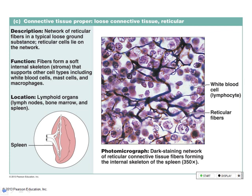Still in the loose connective tissue category, we have reticular connective tissue. What do we have a lot of in this? Lots of reticular fibers. In this particular specimen — the spleen — we have lots of white blood cells too, because white blood cells use the reticular fibers as a place to stick. The reticular fibers are the dark lines that come through, and all of the purple blobs are the nuclei of cells stuck to those reticular fibers.